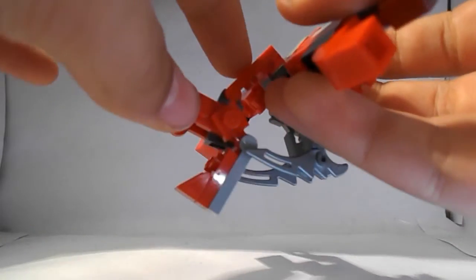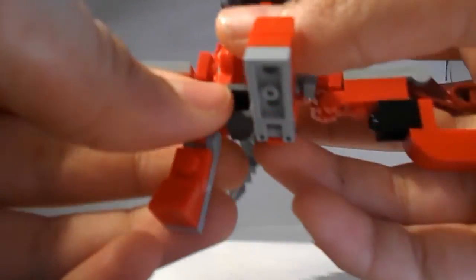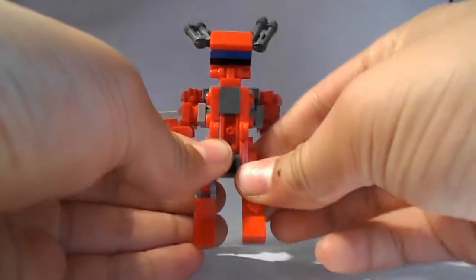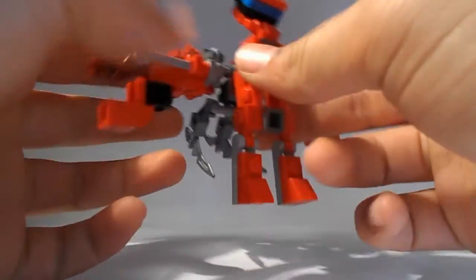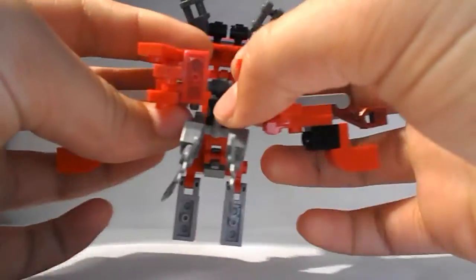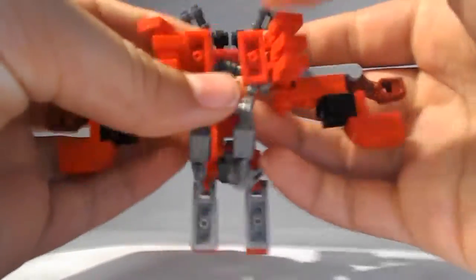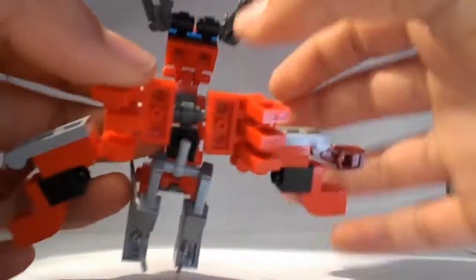And just bring that all the way up so that it sits flush with this piece. Then you're just going to bring down these bits right here. Now the leg assembly back here are on these T-joints.